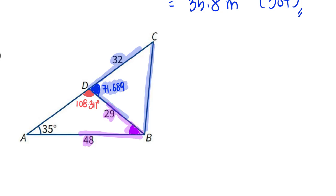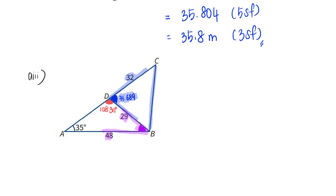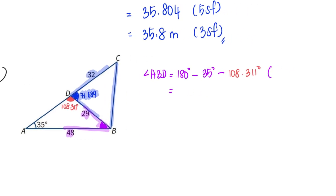Step one: since angle ABD is not given, that's what I will set up to find first. I will have 180 minus 35 and minus 108.311 degrees since this is the angle sum of triangle. This will give me 36.689 degrees.